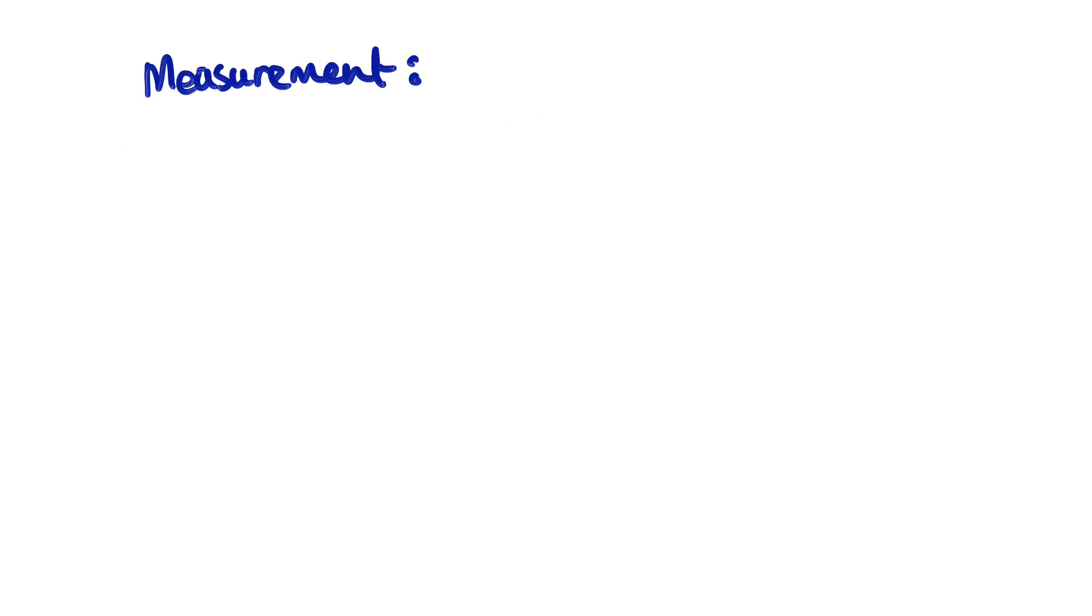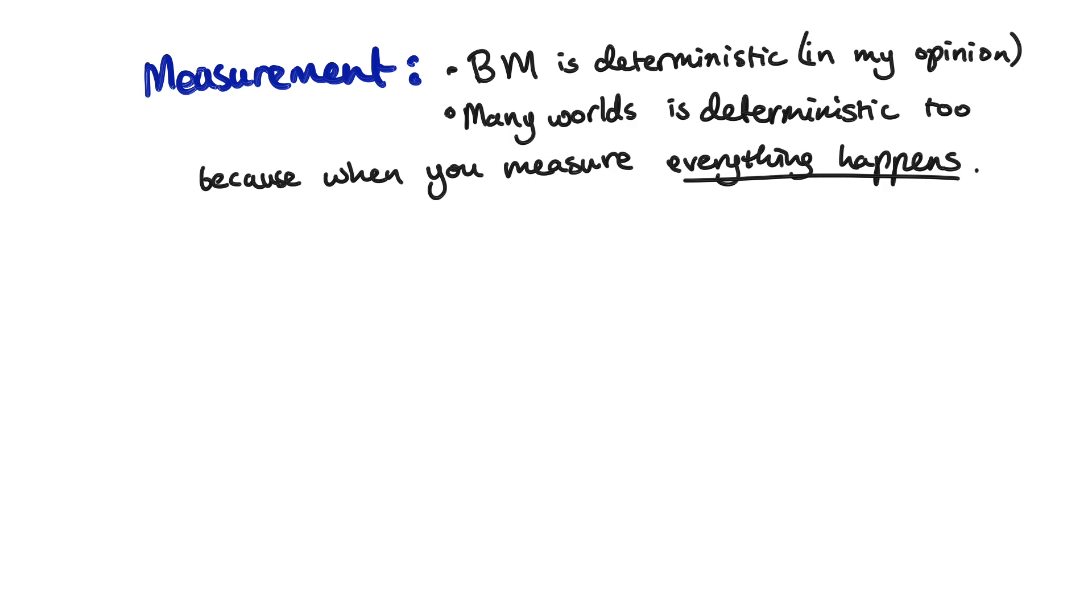As for measurement, in Bohmian mechanics, my take on it is that the outcome is uncertain but not random, making Bohmian mechanics deterministic. Many worlds is an interpretation that I want to make videos about eventually, but it's also deterministic because it doesn't accept that measurement causes collapse. Instead, all possible outcomes happen.